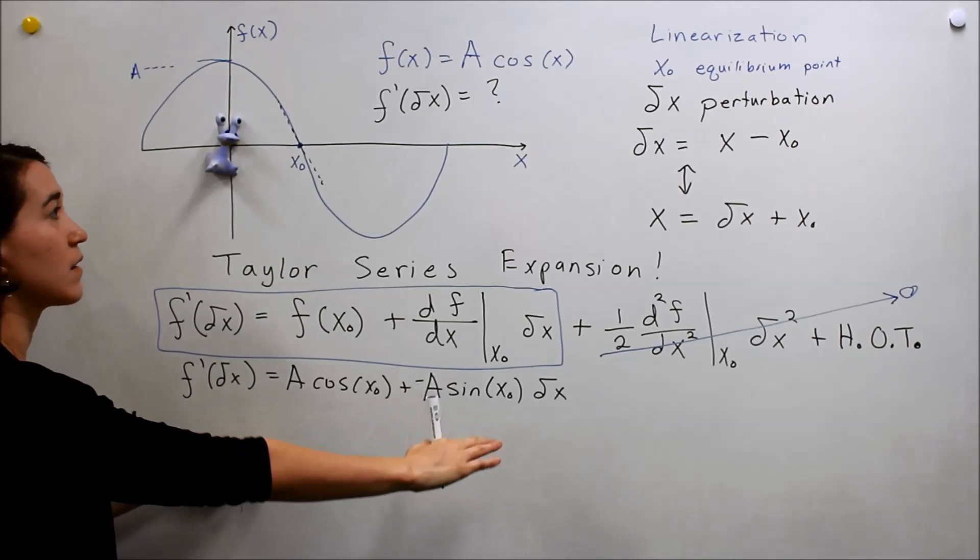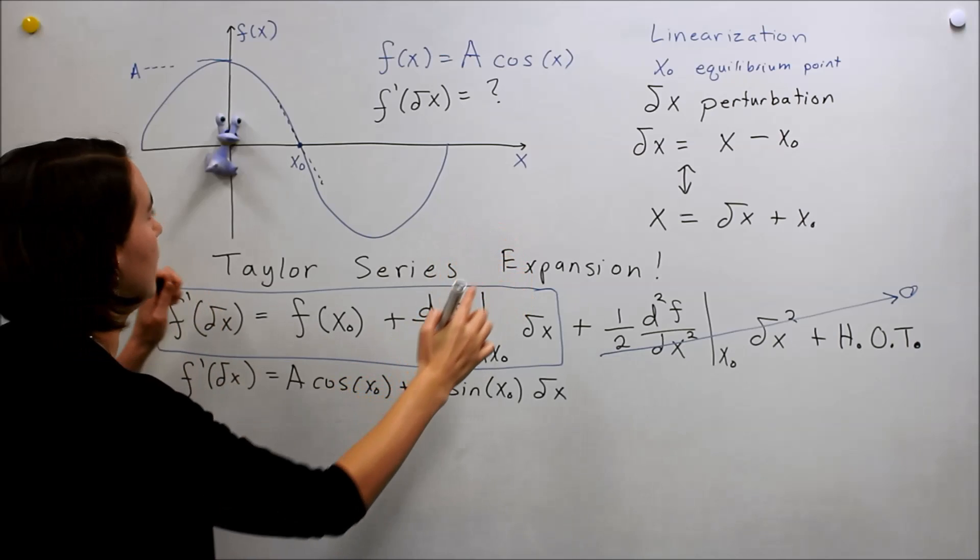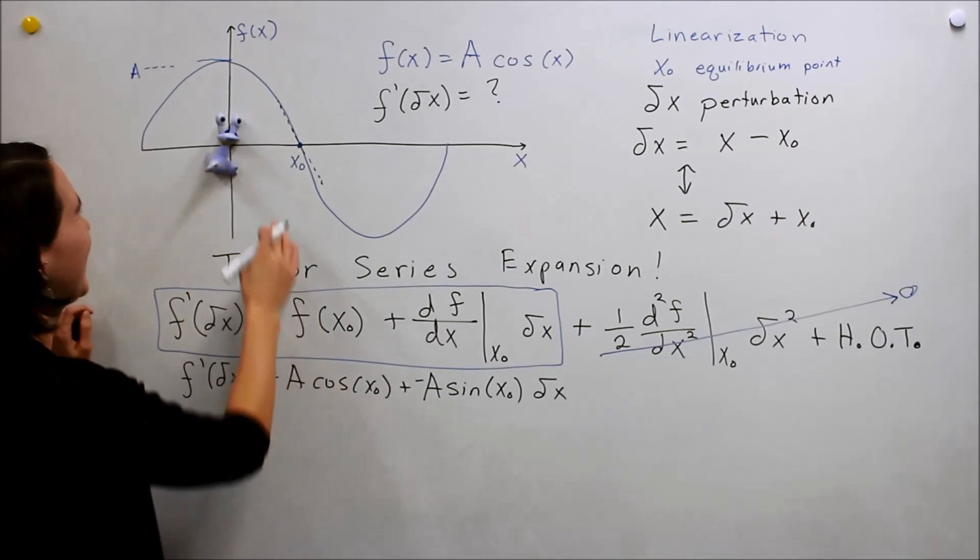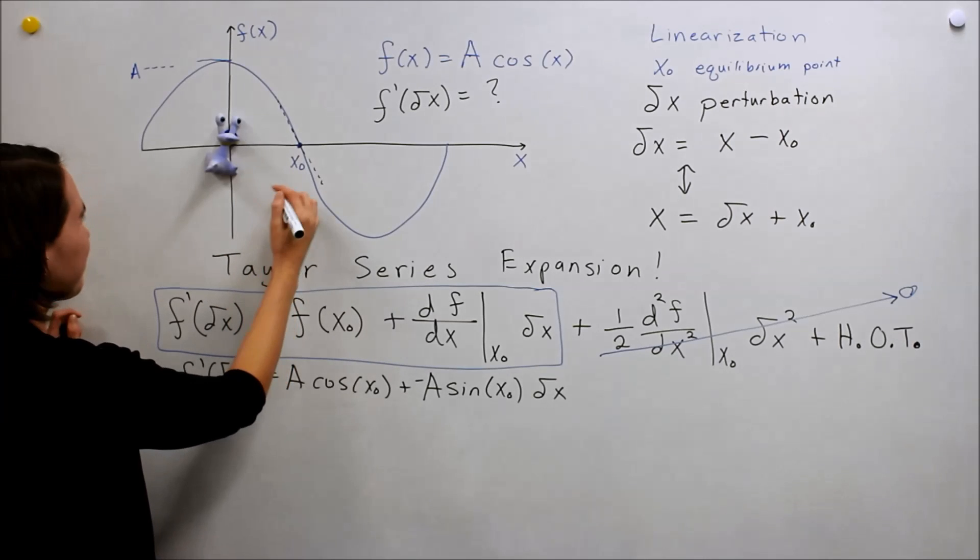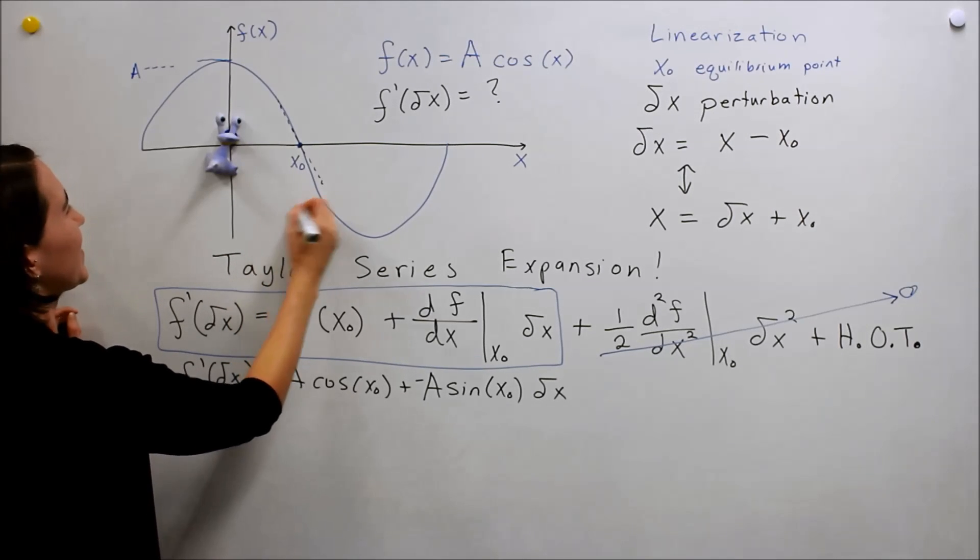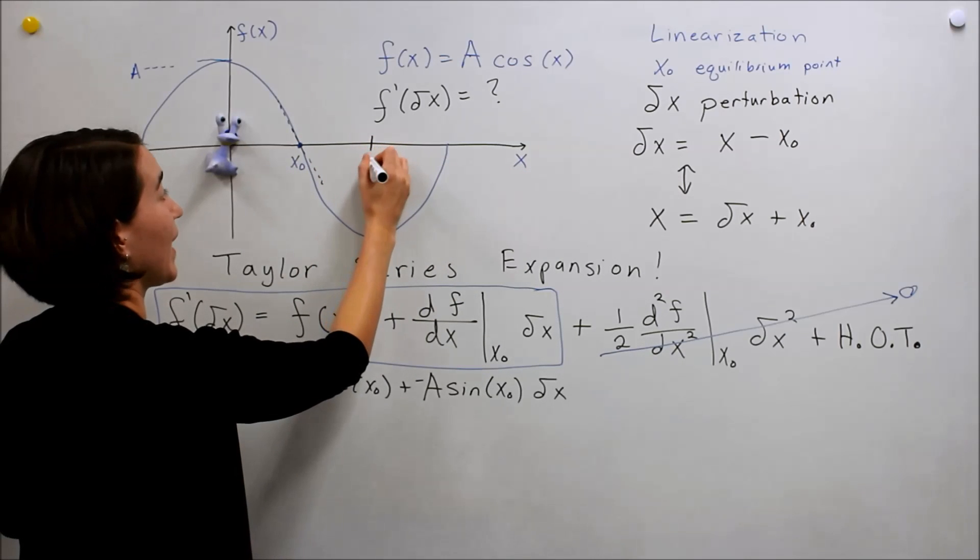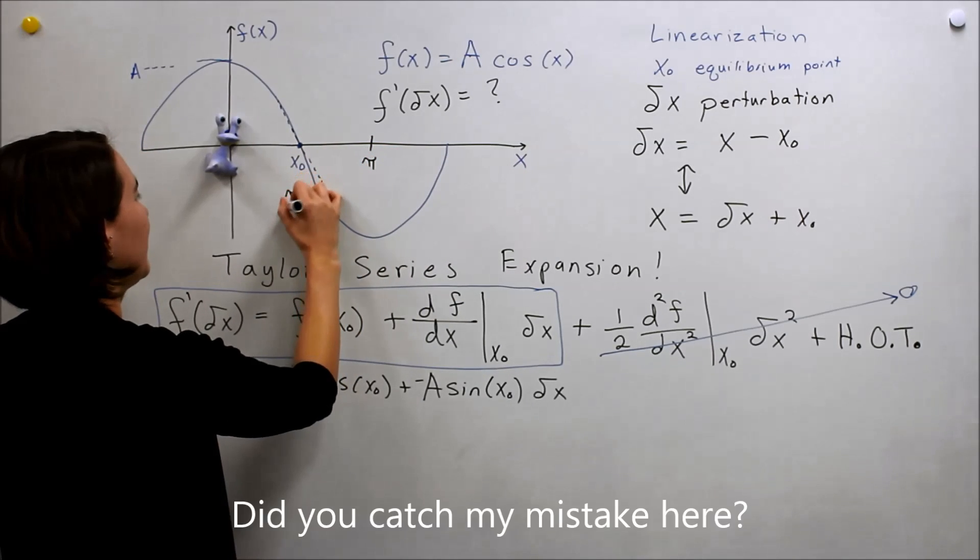So now we can evaluate this. So we'll plug in our... Oh, I didn't tell you what the equilibrium point was. Well, let's... Here the equilibrium point is going to be equal to... Well here is... Look at this whole thing. For cosine this would be π, so it's π over 4.